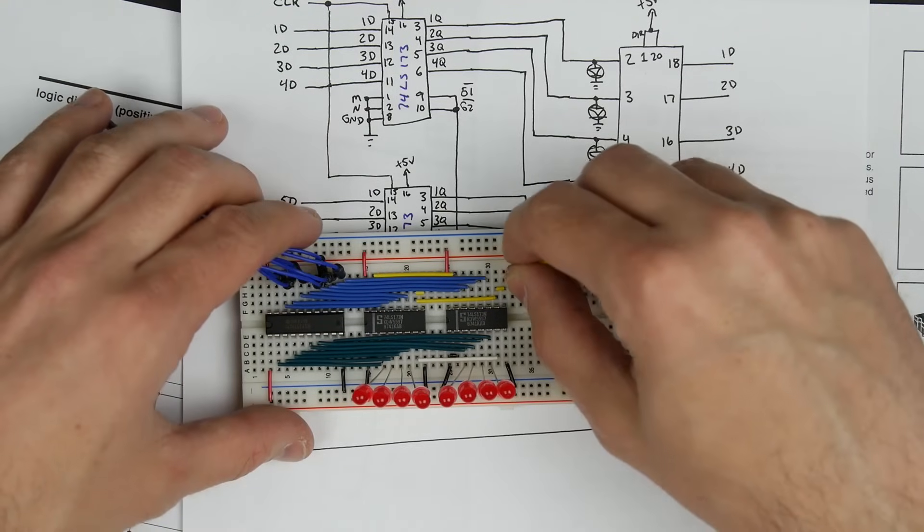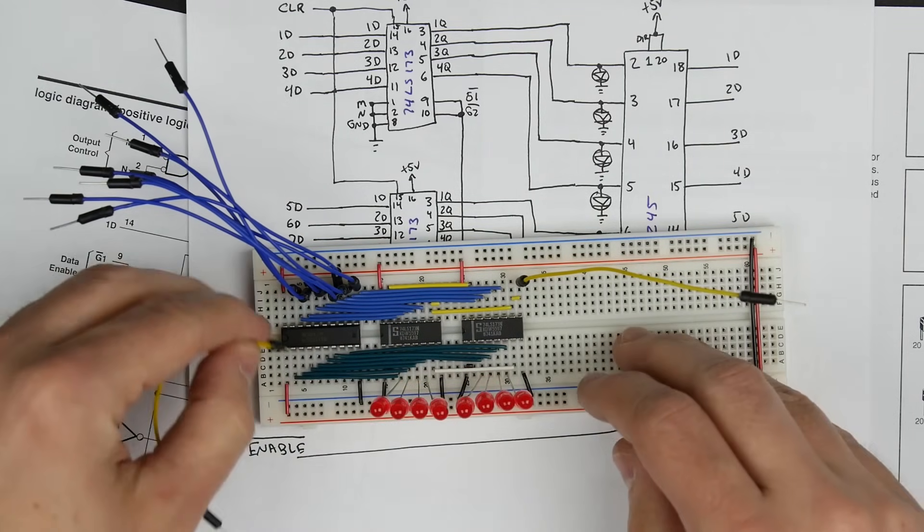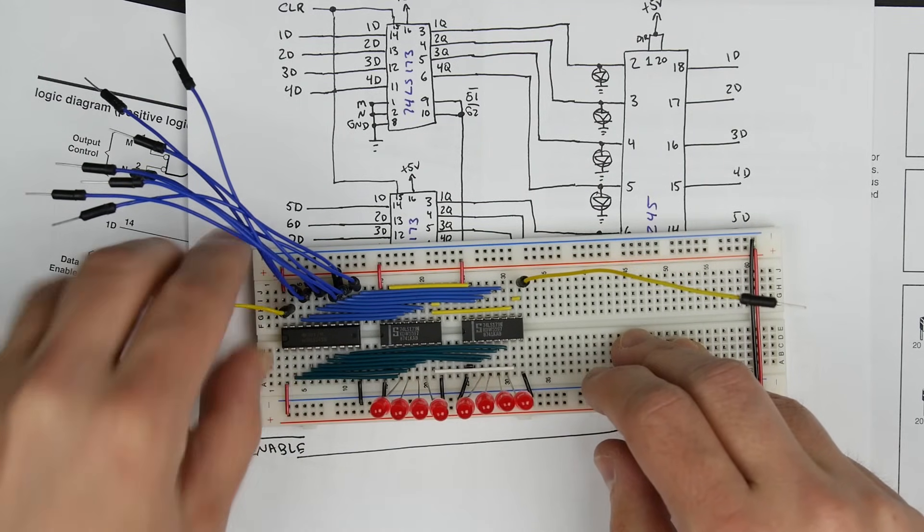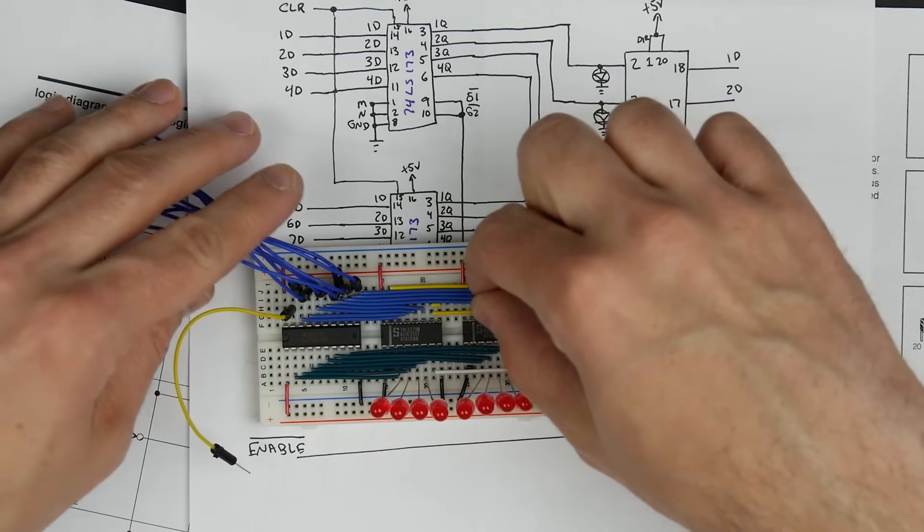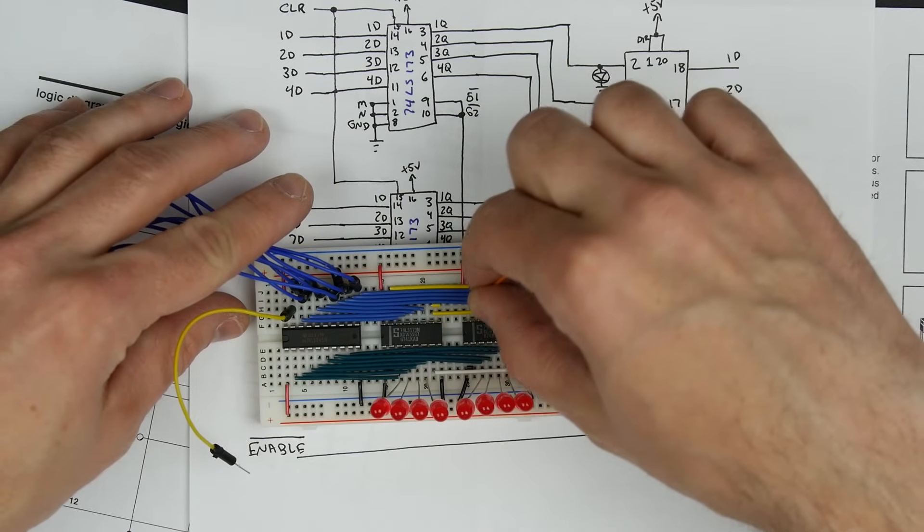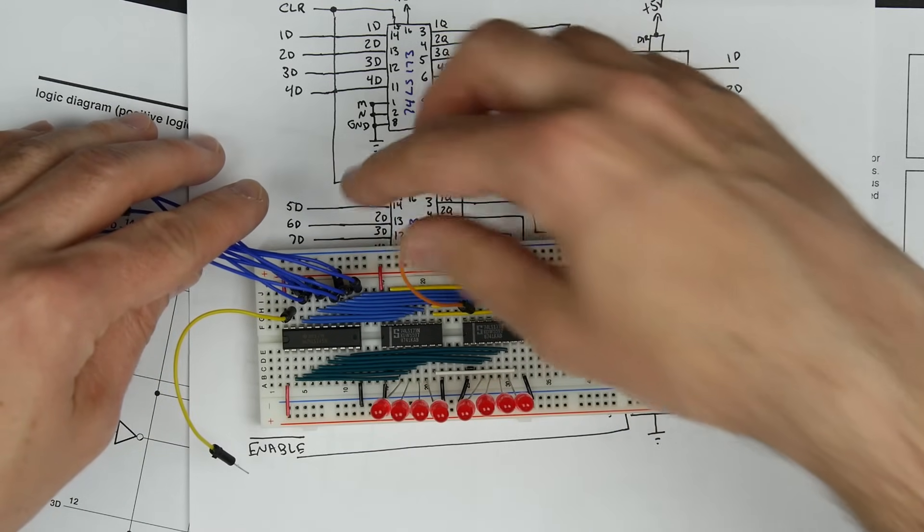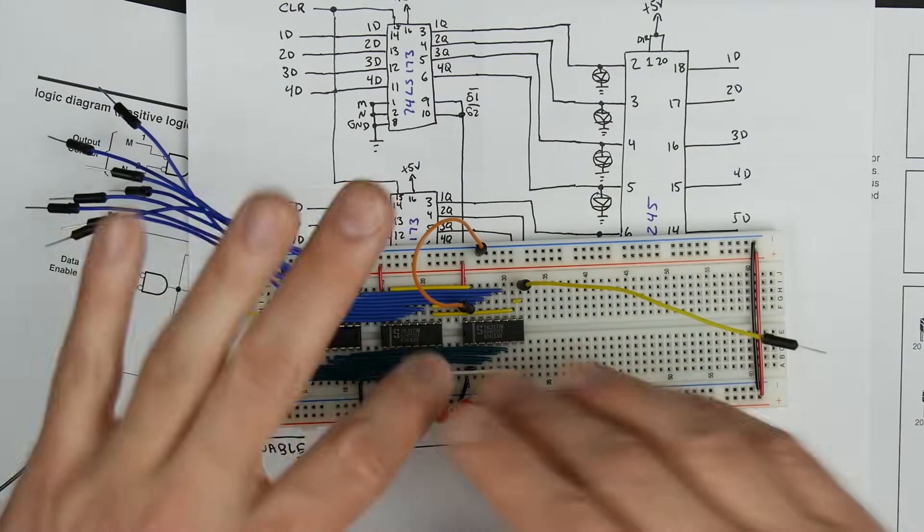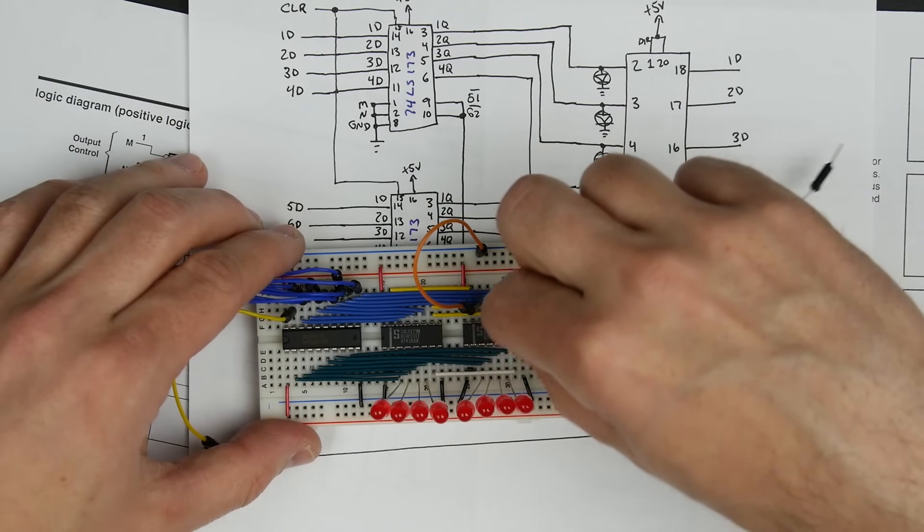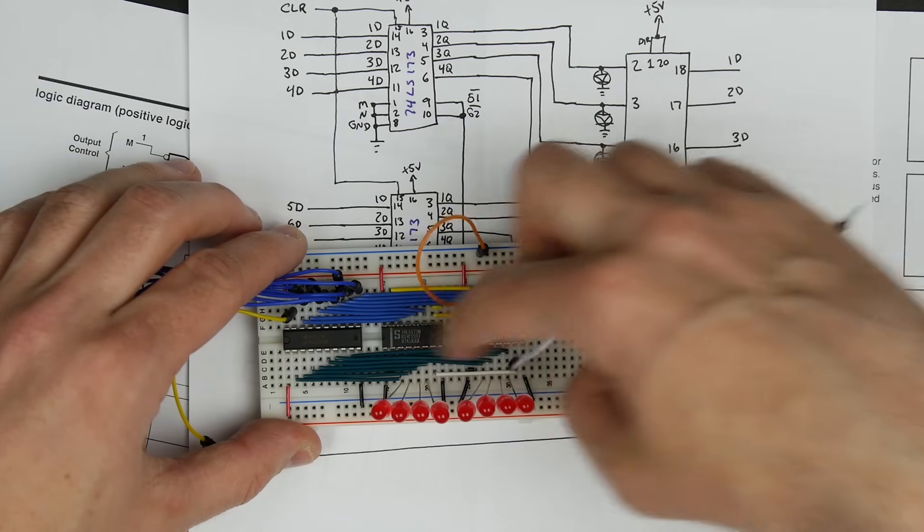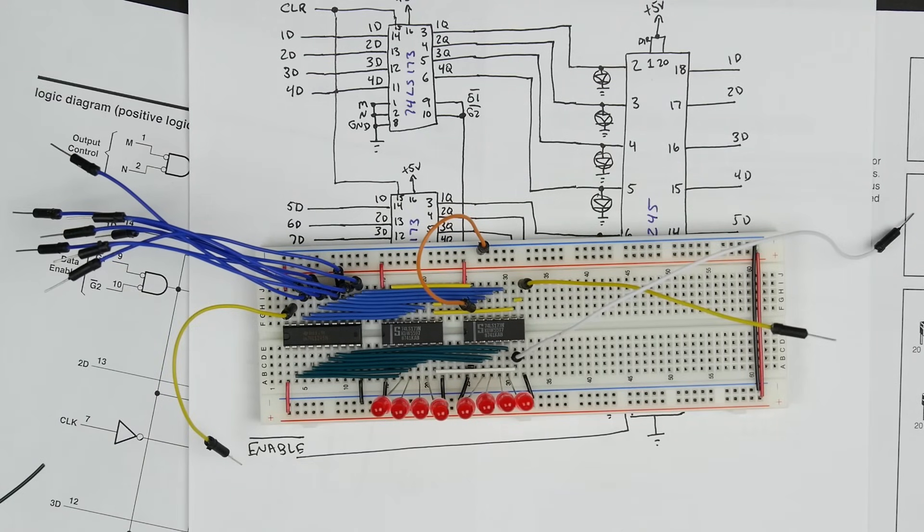So we've got our load signal over here. We've got the enable over here, which is the enable for the output to the bus. And of course, we've got the reset here as well, which is this pin 15, which we'll just tie that to ground. We're not going to use that. We'll just leave that so that it's not resetting everything. And then the last thing we have is the clock, which is right here. This is this white wire connecting here. And so that's it. That's pretty much our register.